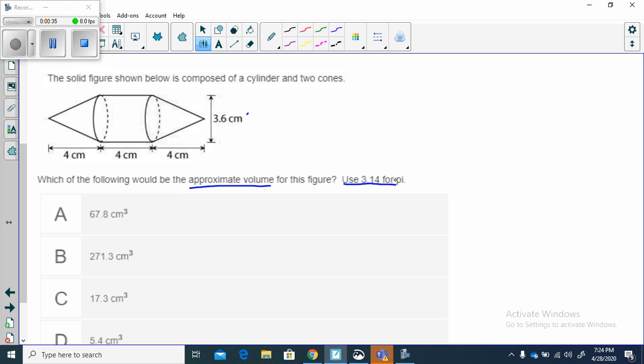Let's look to see what we have. Here in the center we have a cylinder, then we have two cones. Notice the cones have the same height, which is 4, and the same diameter, which is 3.6. So these cones are exactly the same size.